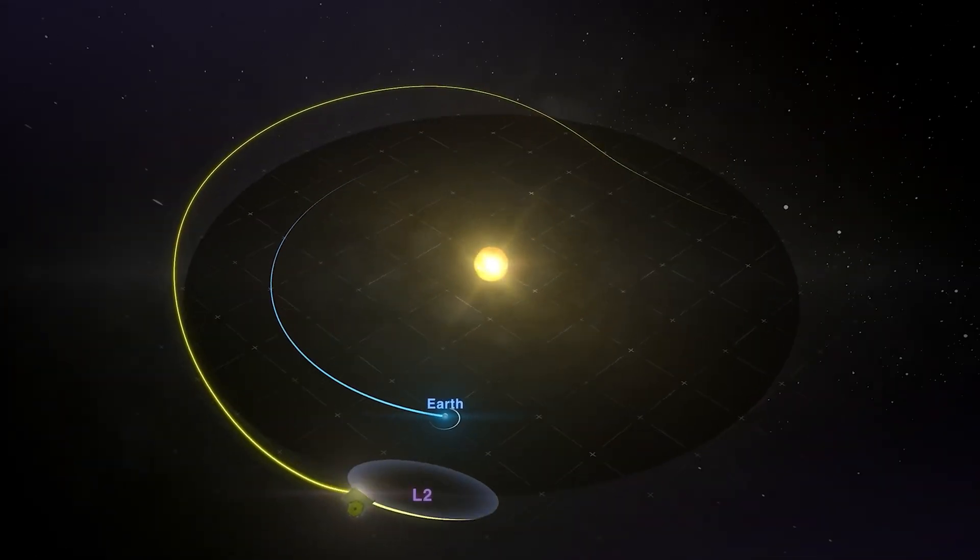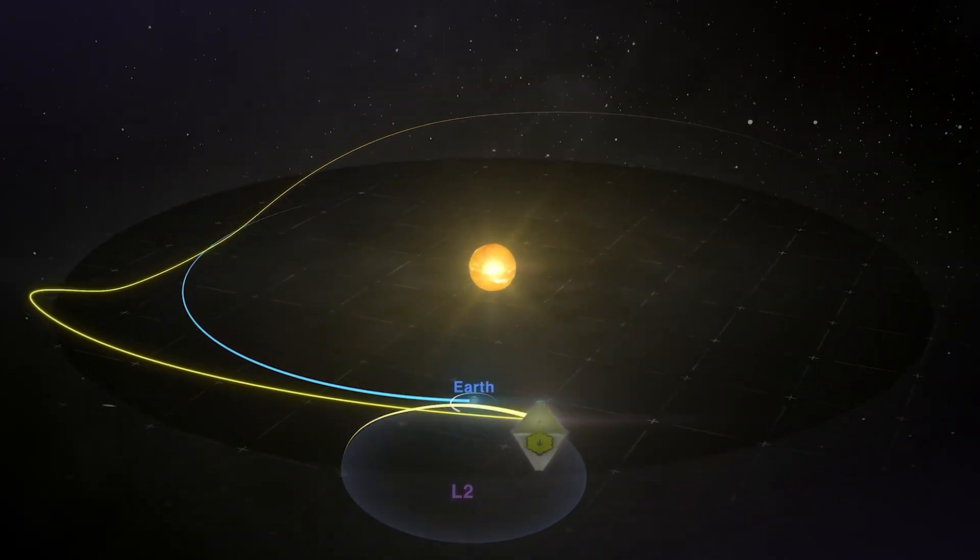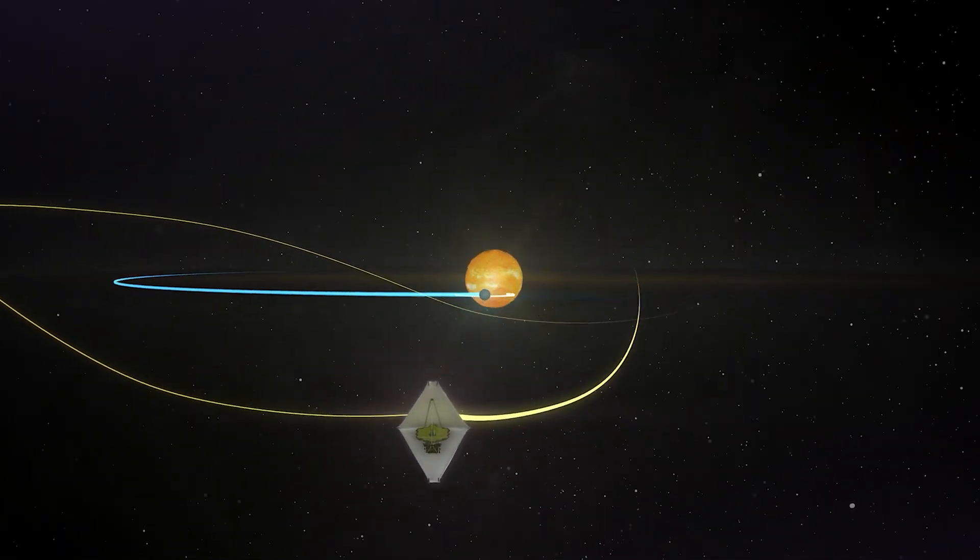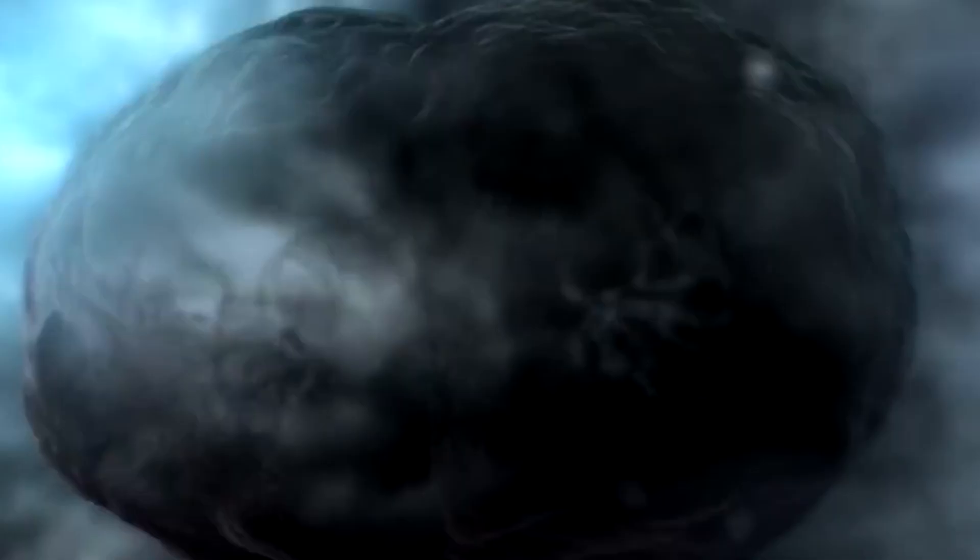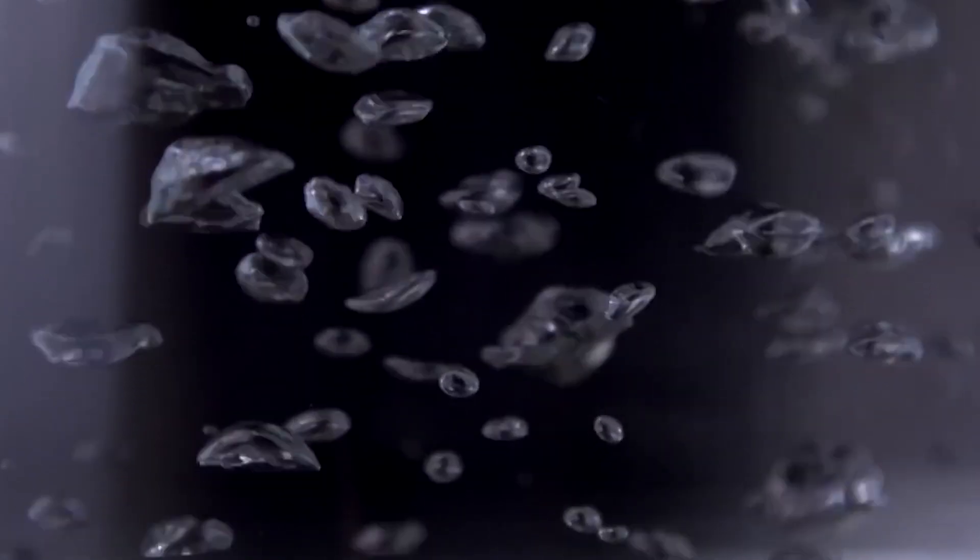The next step will be to assess the atmospheric chemistry on Proxima b to determine its potential to support life, focusing on the presence of gases such as oxygen, water vapor, and methane as key indicators of habitability.